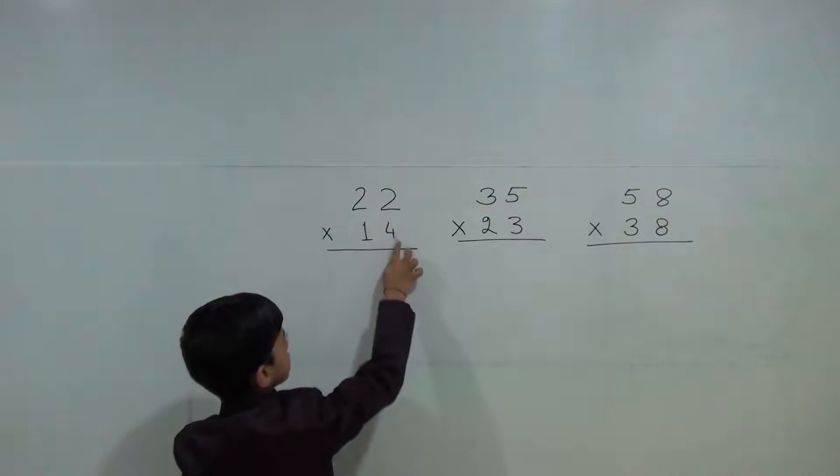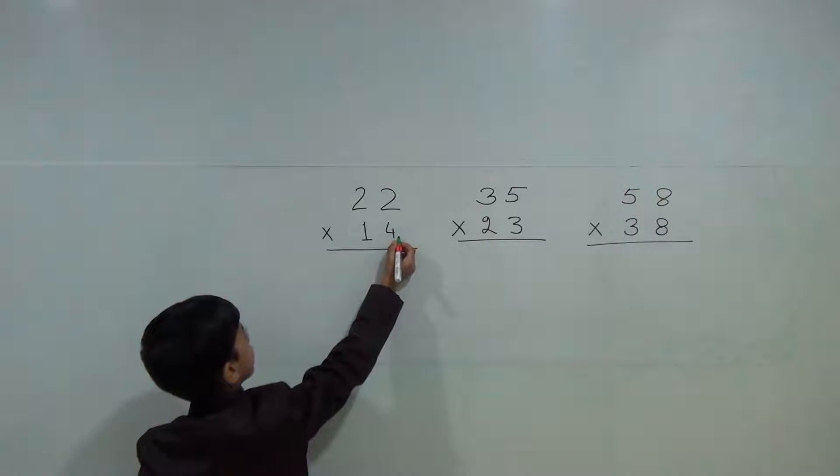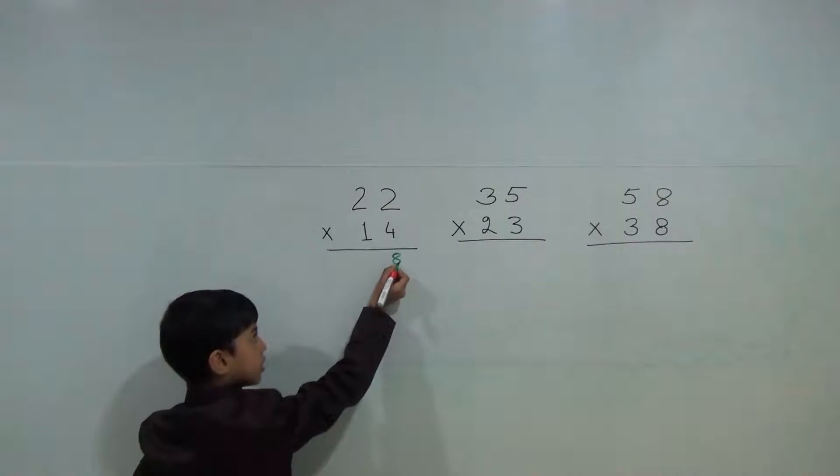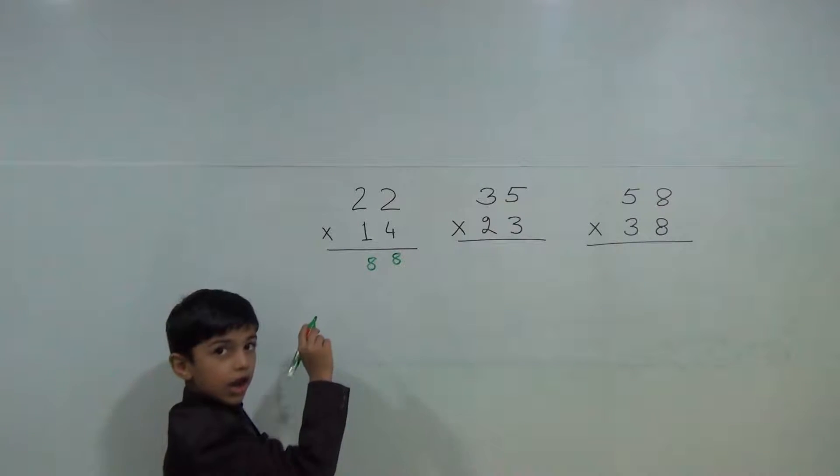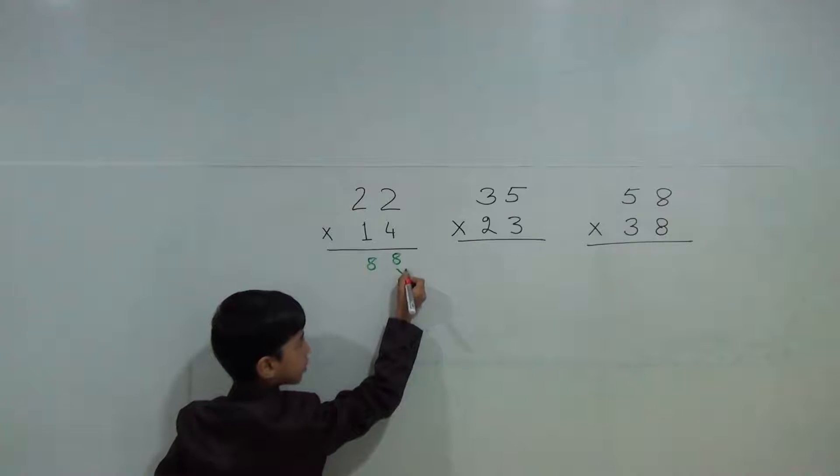Now first we will do 4 times 2 are 8, 4 times 2 again are 8, so 88. Then here are 2 digits, so we will put a cross.